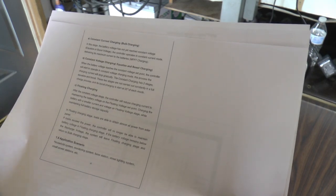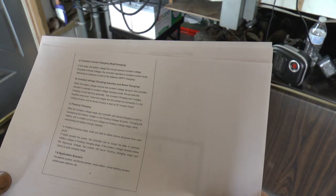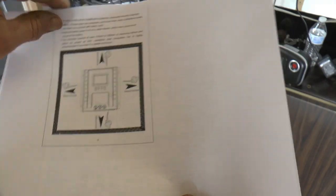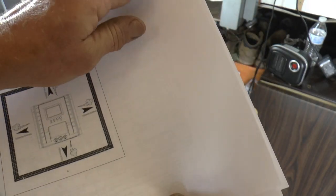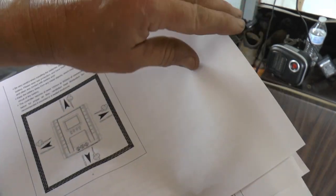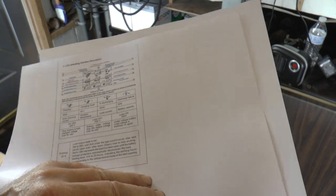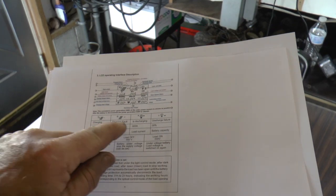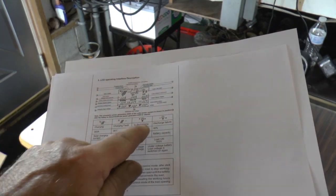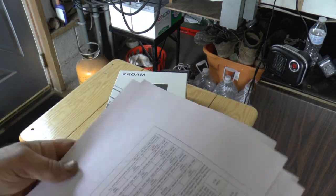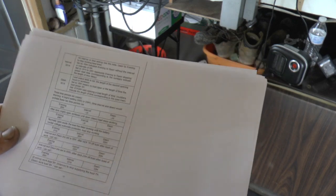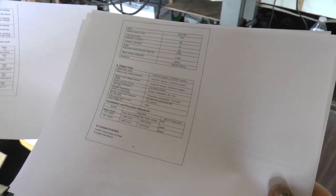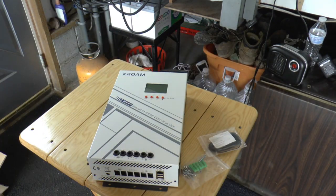It tells you about constant current charging, constant voltage float charging, what you can use it for, some mounting instructions - gotta have room around it, of course that's common sense. They have some stuff on the display and it tells you a lot about setting up the load, which I don't know a lot of people that actually use that portion. I never have. So the manual doesn't do a whole lot of good.